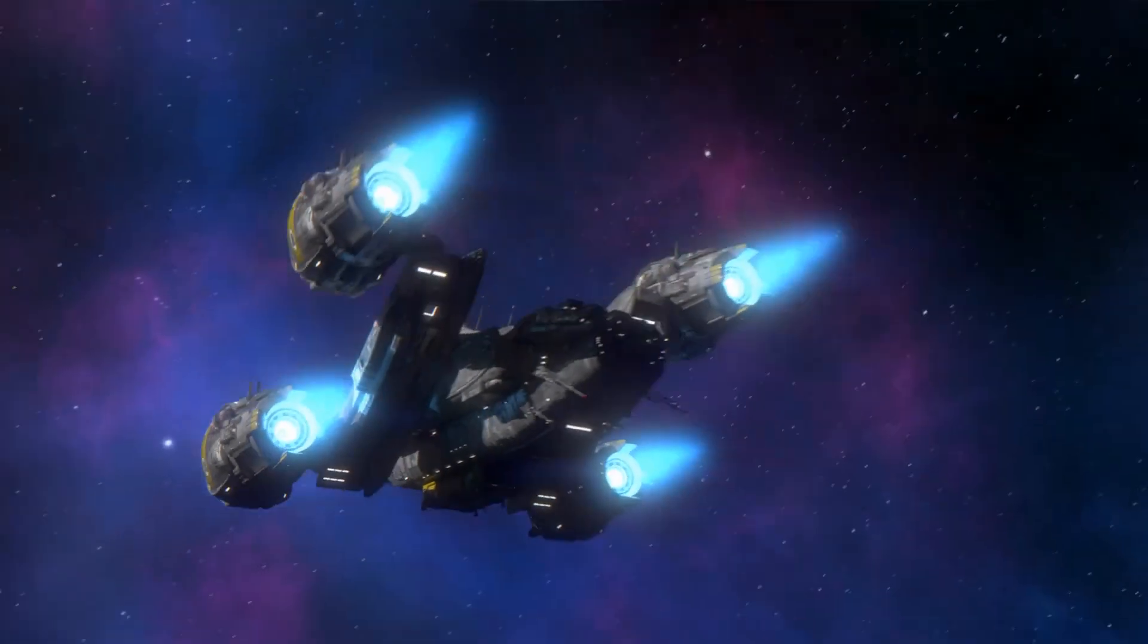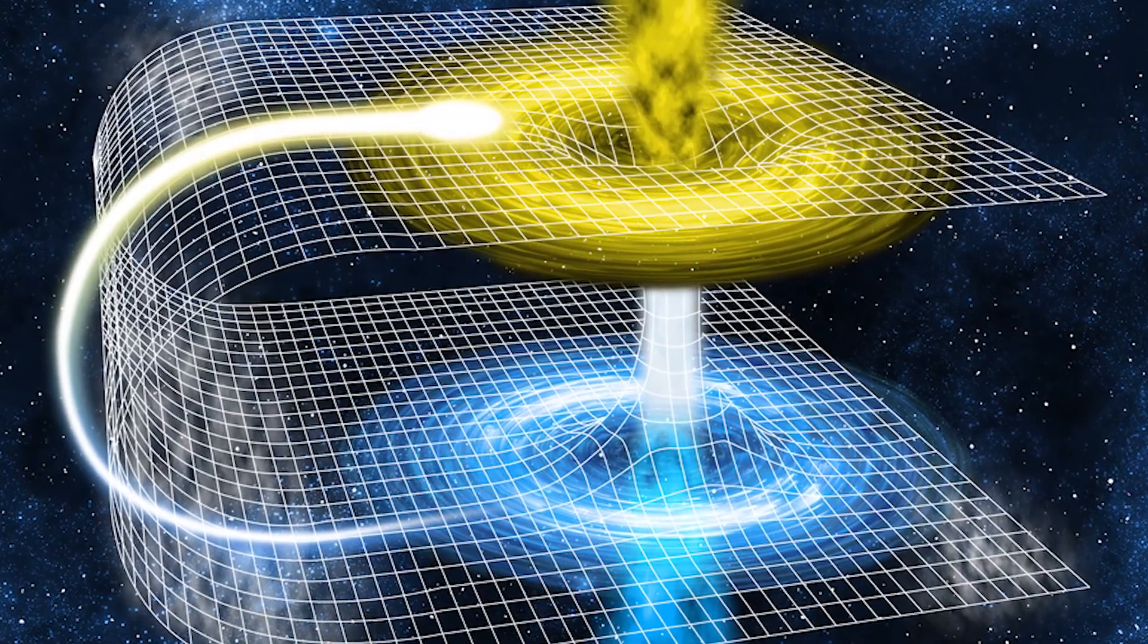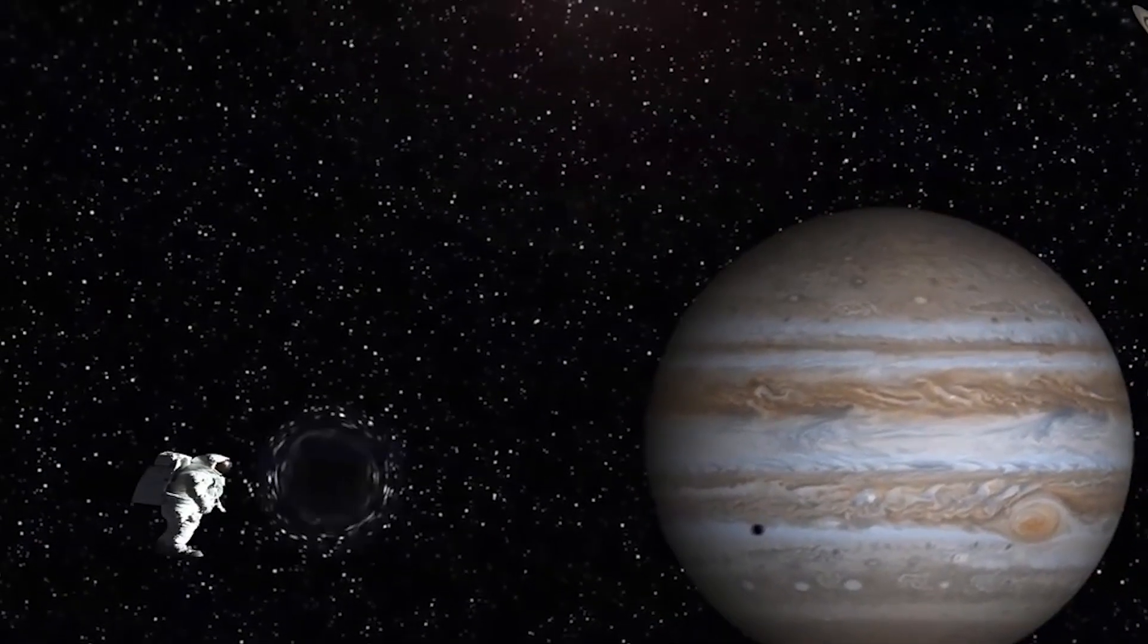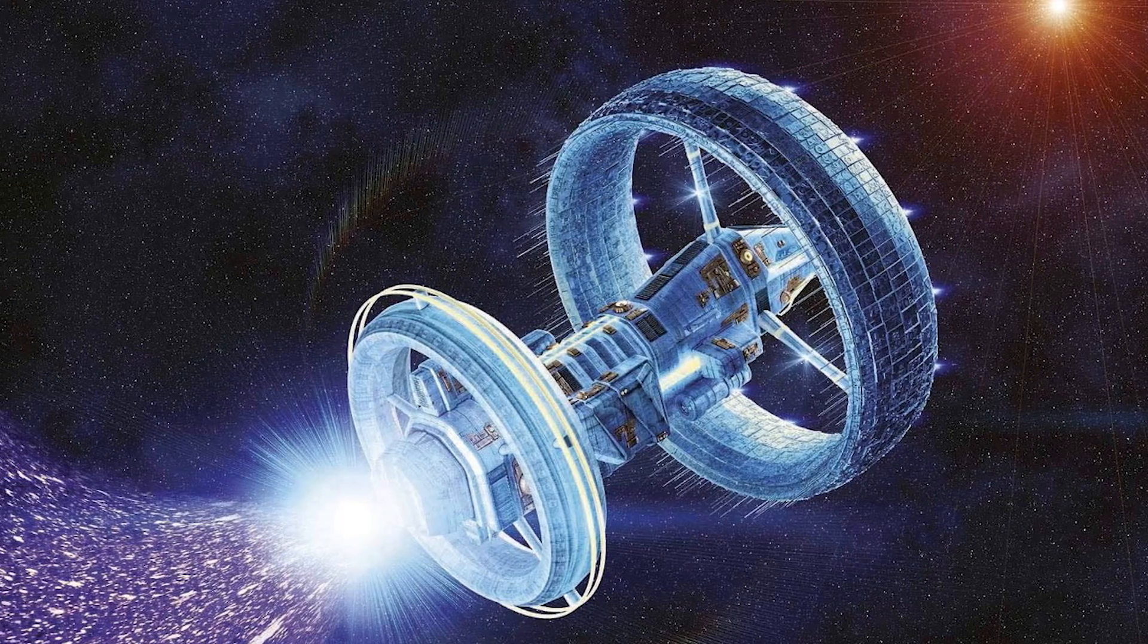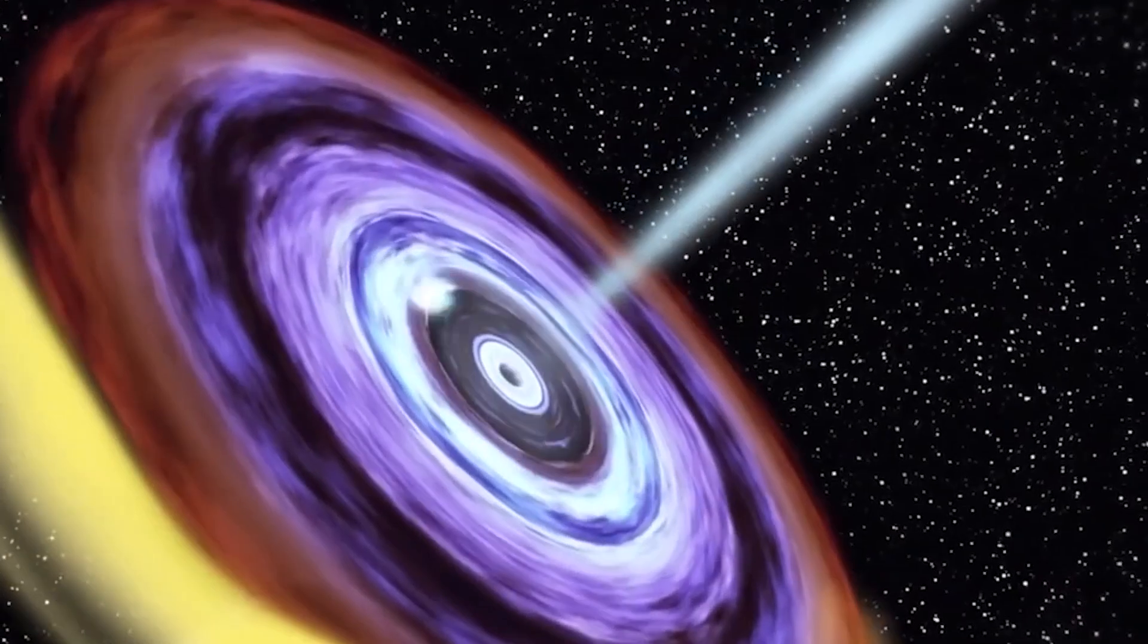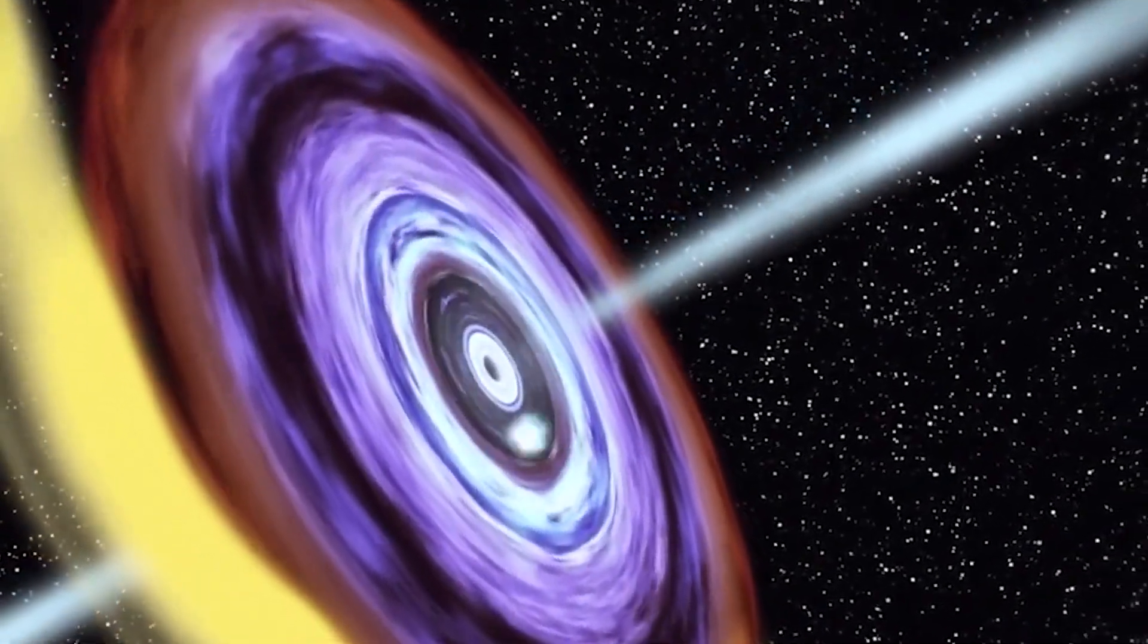Another option is to skip going fast at all and instead create wormholes. Wormholes are rips in spacetime that connect to different places of any distance. Even if the locations are incredibly far, traveling via the wormhole will make the trip nearly instantaneous.